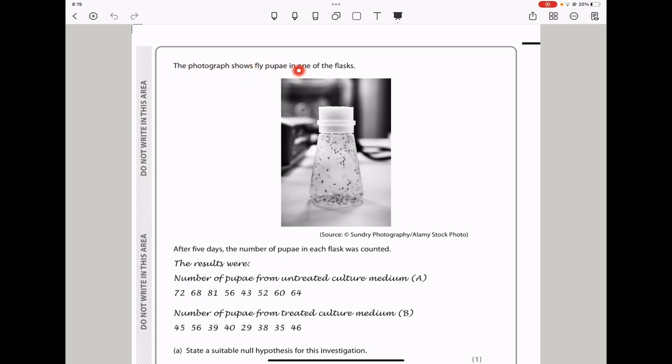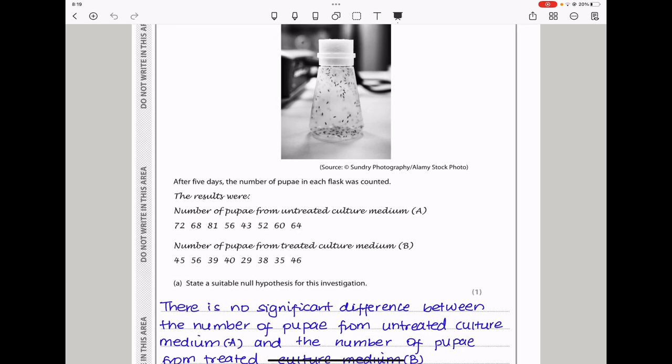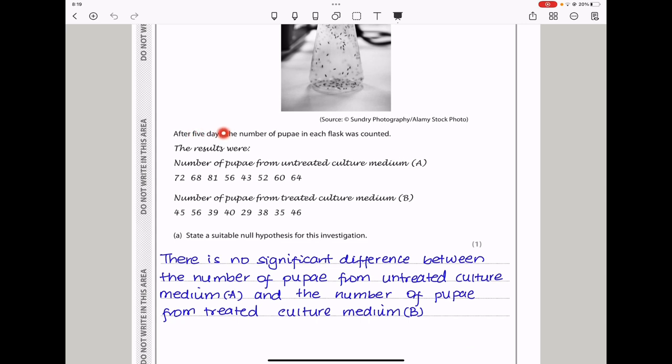The photograph shows fly pupae in one of the flasks. After 5 days, the number of pupae in each flask was counted. The results were as we can see here. They want us to state a null hypothesis for this investigation. Because we are comparing two datasets, I say there is no significant difference between the number of pupae from untreated culture medium A and the number of pupae from treated culture medium B.